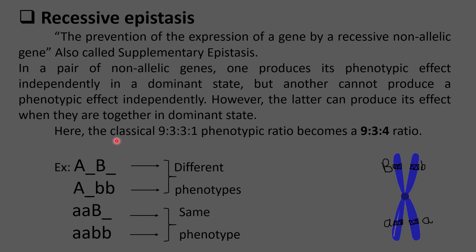The classical 9:3:3:1 phenotypic ratio becomes a 9:3:4 ratio here. When recessive alleles at one locus — where one pair of genes is present — mask the expression of both dominant and recessive alleles at another locus, this condition is known as recessive epistasis.